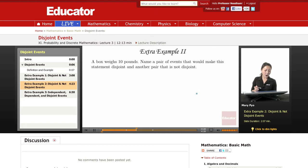The next example. A box weighs 10 pounds. Name a pair of events that would make the statement disjoint and another pair that is not disjoint.